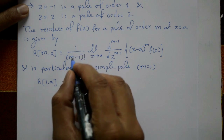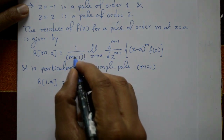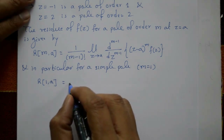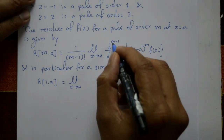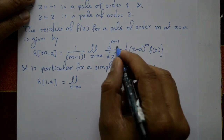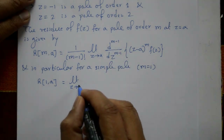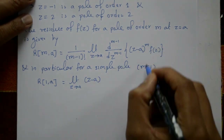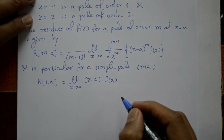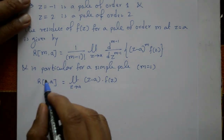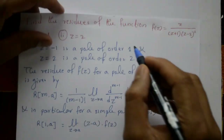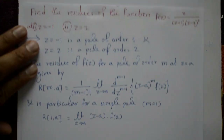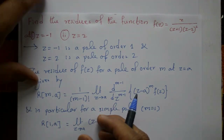With m = 1: R(1, a) = [1 / (1-1)!] × limit as z tends to a of (z - a) × f(z). Since (1-1)! = 0! = 1, this simplifies to: limit as z tends to a of (z - a) × f(z). A simple pole means order is one.